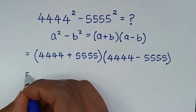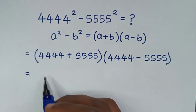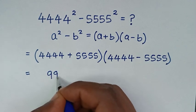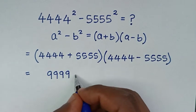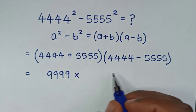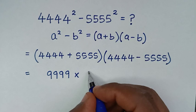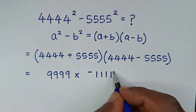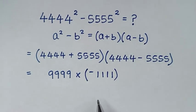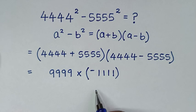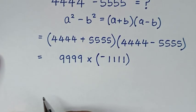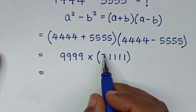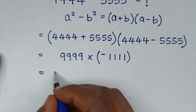In the next step, we'll take this plus this: it is 9,999. Then times this minus this: it is negative 1,111. We have a negative outside the bracket.